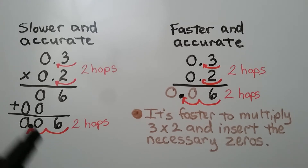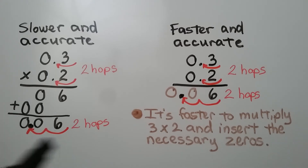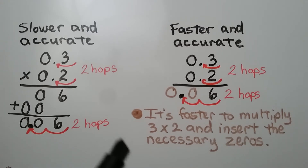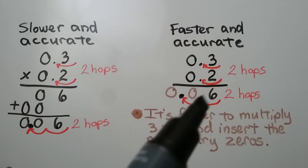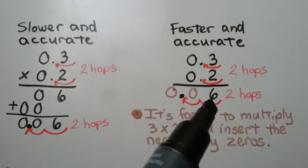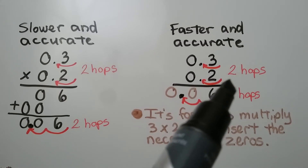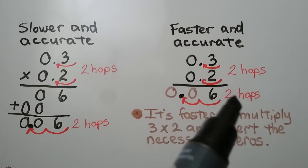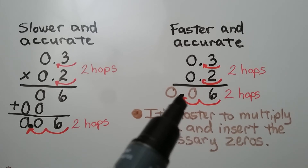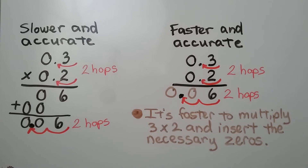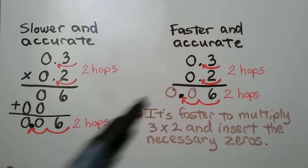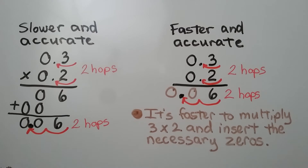This way is slower because we're multiplying the zeros and writing all the place values, but it is accurate. A faster and accurate way is to think of the basic multiplication facts — 2 times 3 is 6 — and then just count the decimal place value hops. We have 2 hops, so there's going to be 2 in the product. We put a 0 as a placeholder in the tenths place, and it's faster to multiply 3 times 2 and insert the necessary zeros.